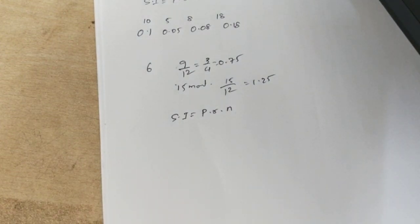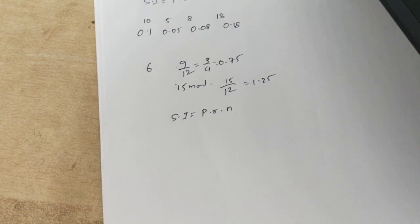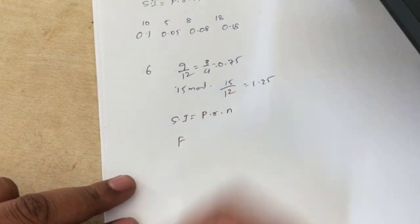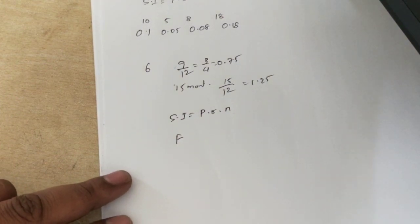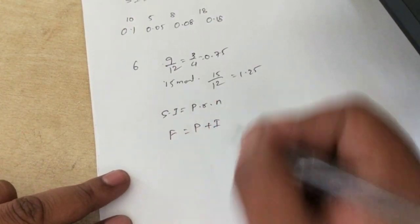Let's say you give a loan to your friend at 5% interest. You give ₹10,000, and after one year he repays ₹10,500 — that is ₹10,000 principal plus ₹500 interest. At the end of the year he pays ₹10,500. We call this the future value. Future value is the sum total of principal and interest payable at the end of the interest period: F = P + I.